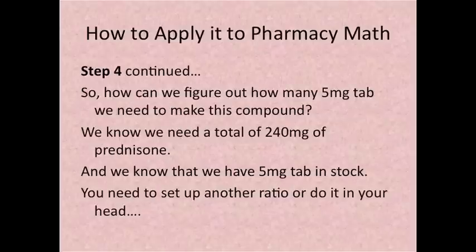Step 4 continued. So how can we figure out how many 5 milligram tablets we need to make this compound? We know we need a total of 240 milligrams of prednisone and we also know that we have 5 milligram tablets in stock. You need to set up another ratio or you can do it in your head.